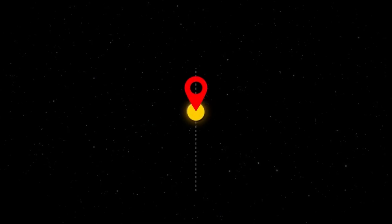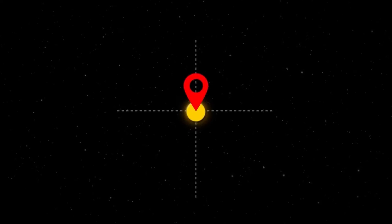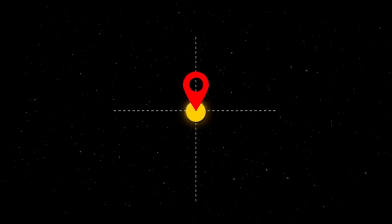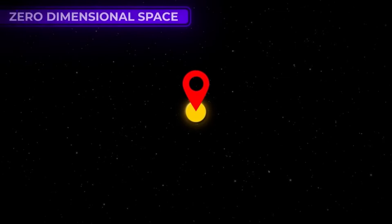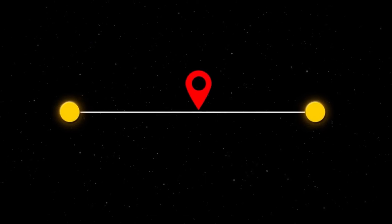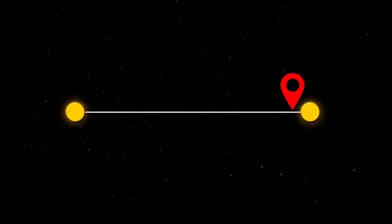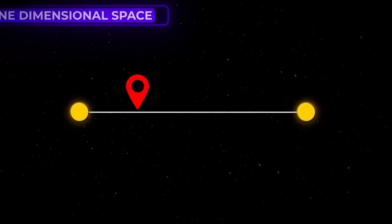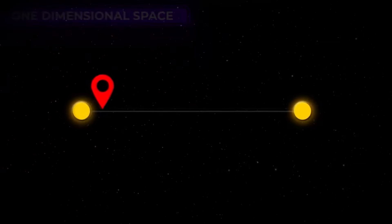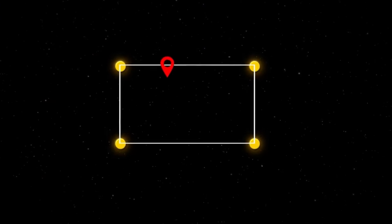Imagine a dot — it's the simplest form of existence with no length, width, or height. That's the zeroth dimension. Now stretch that dot into a line and you've created the first dimension: length. Add another line perpendicular to the first and you've got the second dimension: width — like a sheet of paper or a computer screen. Now imagine stacking multiple sheets of paper; what you've added is depth, creating a three-dimensional object.